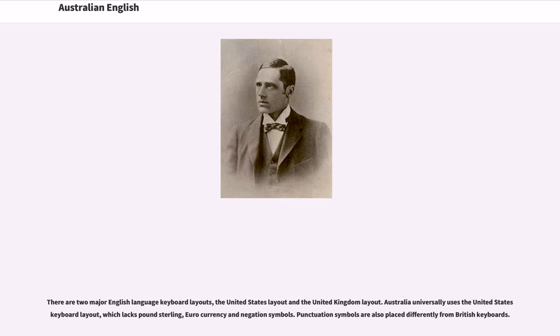There are two major English language keyboard layouts, the United States layout and the United Kingdom layout. Australia universally uses the United States keyboard layout, which lacks pound sterling, euro currency and negation symbols. Punctuation symbols are also placed differently from British keyboards.